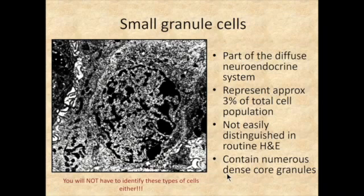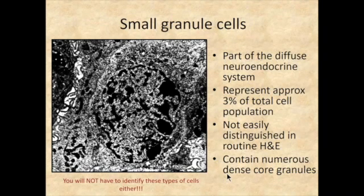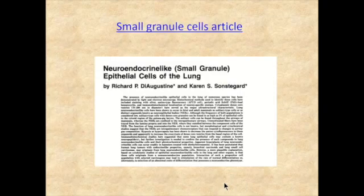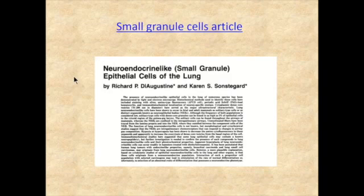There's another population called small granule cells. You don't have to identify these either. They represent about another 3% of the total cell population, and they are part of the diffuse neuroendocrine system that exists in the respiratory system — which also exists in the digestive system. You're not really going to see them or have to look for them. I put a link to an article just in case you want to get a gist for what they're all about.